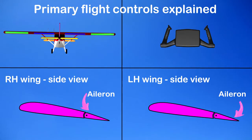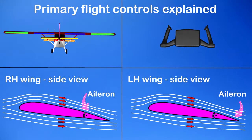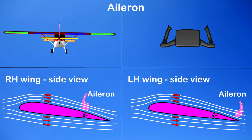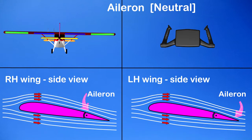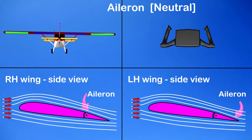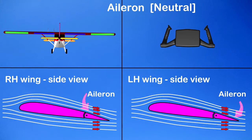Primary flight controls explained. Ailerons. Here both the ailerons are in neutral position. There will not be any change in the attitude of the aircraft.